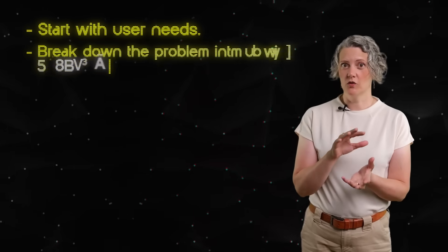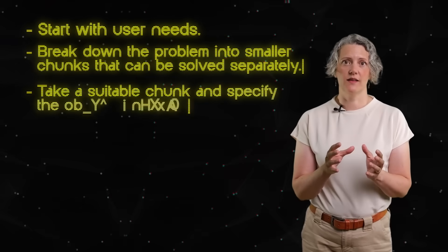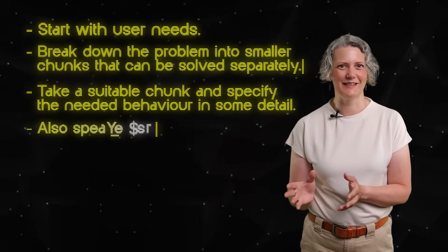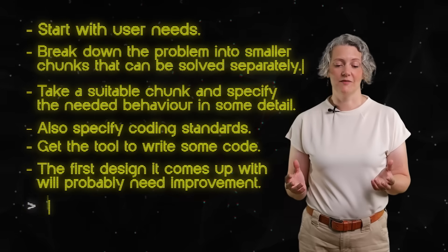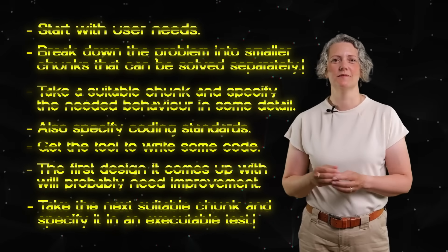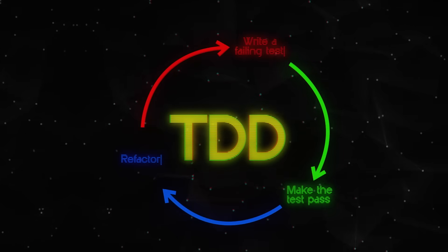The mental model that I use for working together with agentic AI is something like this: start with the user needs; break down the problem into smaller chunks that can be solved separately; take one of those chunks and specify the needed behavior in some detail; also specify coding standards; get the tool to write the code; the first design it comes up with may need improvement — do that, then go back and take the next suitable chunk of functionality, specify it, and so on. There is an additional factor with agentic AI: at every step, you're trying to optimize the contents of the tool's context window so it can work exclusively on the current task. As a mental model, this sounds suspiciously like test-driven development — and of course, that's not a coincidence. The biggest fundamental shift in my mental model for how to design software happened when I learned test-driven development, not when I learned coding with agentic AI.